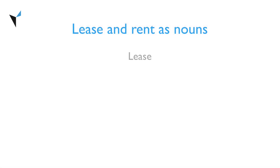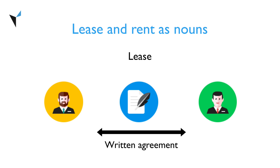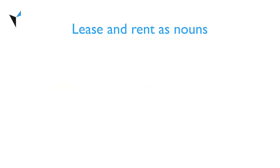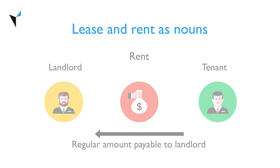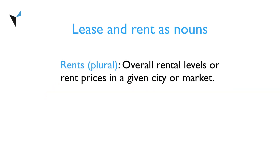Now, the words lease and rent can also be used as nouns. The term lease, when used as a noun, refers to a written agreement between a property owner or landlord and a tenant, and outlines the details of the relationship between them. In the written text of a lease, the landlord is referred to as the lessor and the tenant as the lessee. The noun rent refers to the amount that the tenant has to pay to the landlord on a monthly, quarterly, or yearly basis. Rents in the plural form may also refer to the overall rental levels or rent prices in a given city or market.